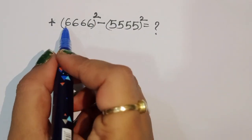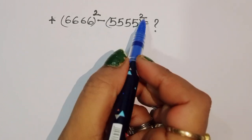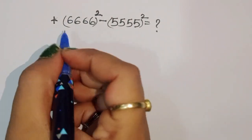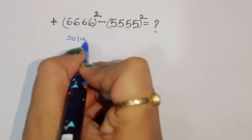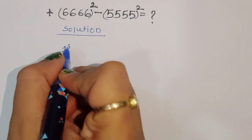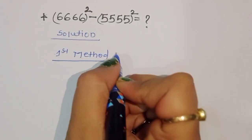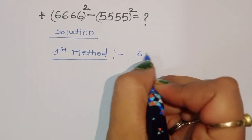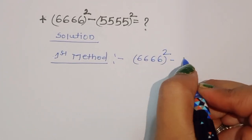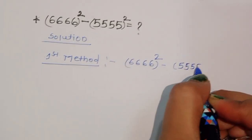The question is: 6666 squared minus 5555 squared. How can we solve this type of question? Let's see the solution. The numbers given are six thousand six hundred sixty-six squared minus five thousand five hundred fifty-five squared.